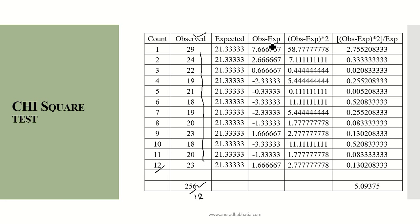The next step is observation minus expected squared, raised to the power of 2. We calculate this for all 12 observations, then divide by the expected value. For example, 58.777778 divided by 21.33 gives us the final value.